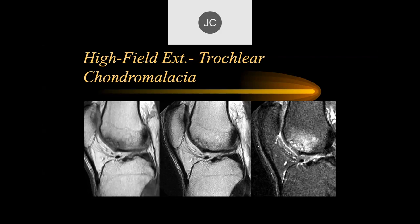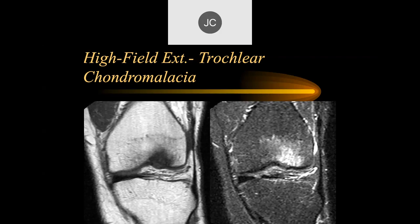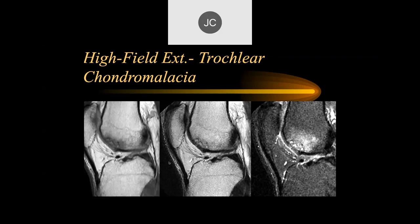Looking at what I think is the lateral trochlea — I see cartilage loss and subchondral cysts. This is actually a long Tesla system. You can really see there's a lot of chronic disease here. These subchondral cysts have chronic, sharp margins. There's probably some acute on top of this, which is more the edema with indistinct margins — that's more an acute injury in this patient.